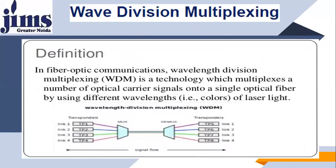In fiber optic communication, Wavelength Division Multiplexing is a technology that multiplexes a number of optical carrier signals into a single optical fiber by using different wavelengths or colors of light. We have sources — link one through link four — each with a different output wavelength: F1, F2, F3, and F4. All four different wavelengths are multiplexed and carried over a single fiber.